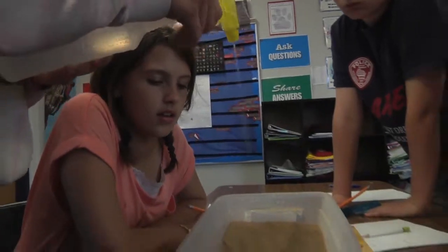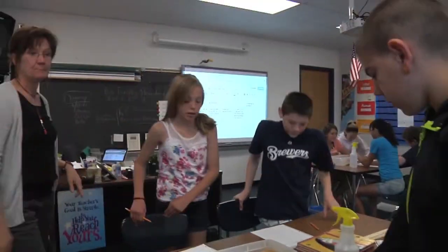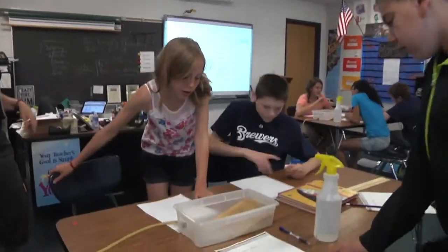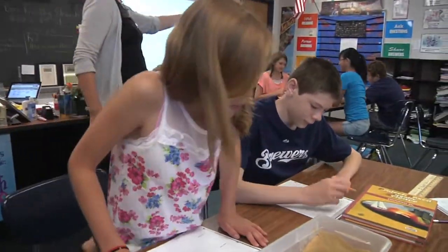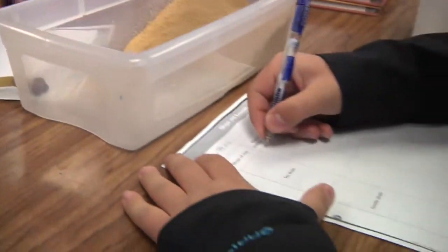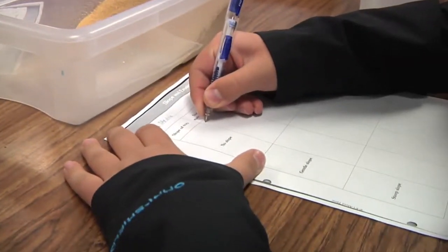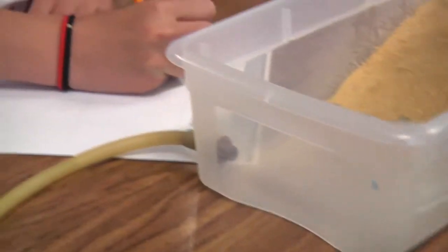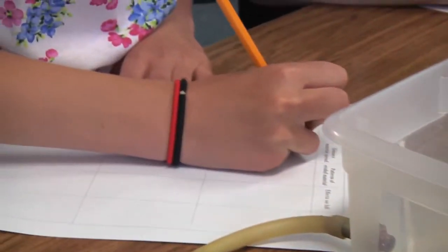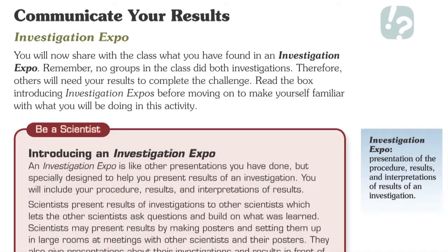Each group needs to analyze their results. With no slope, there is like no erosion — the sand doesn't spread much. Students are finding trends and making claims based on the patterns they observe. If you're seeing patterns, you can now make a claim.